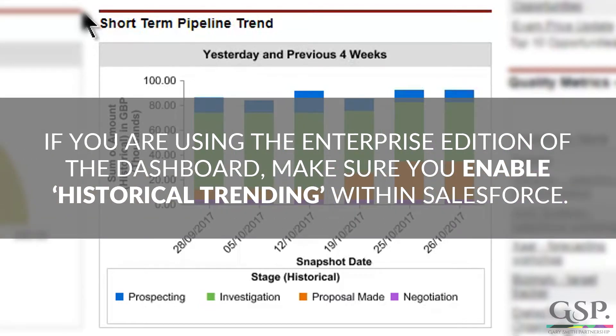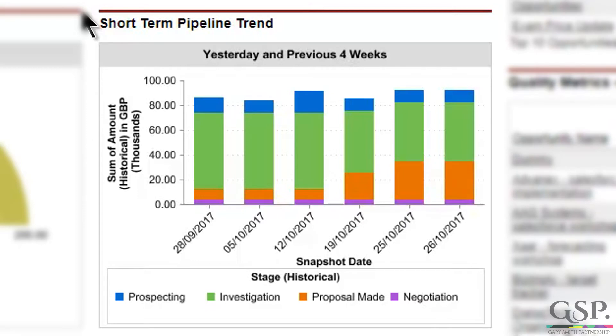So, if you're using the Enterprise Edition of the dashboard, make sure you enable the historical trending feature. It's not enabled by default — you might need to go and enable it in your org. That's really easy to do, let me just show you.